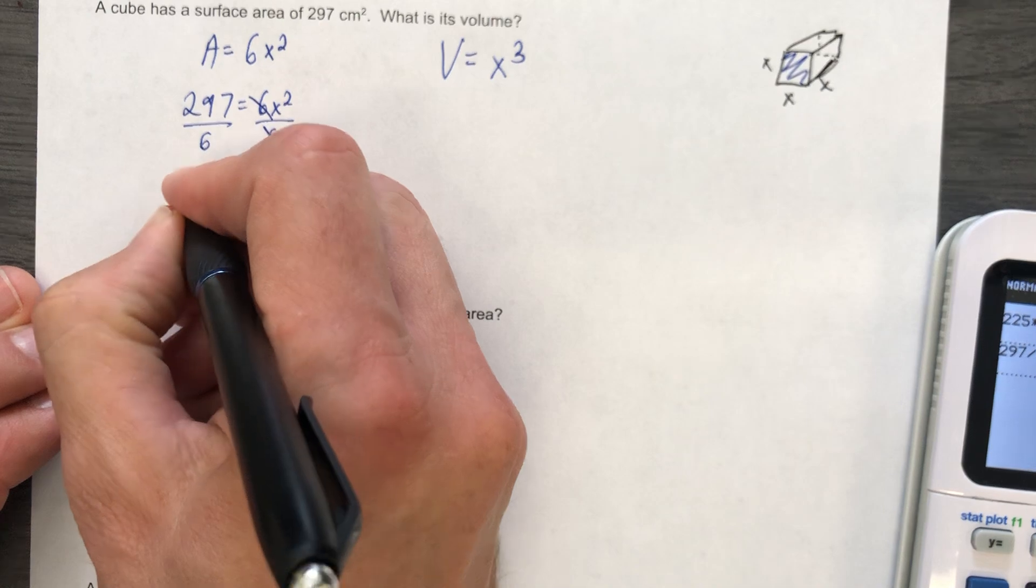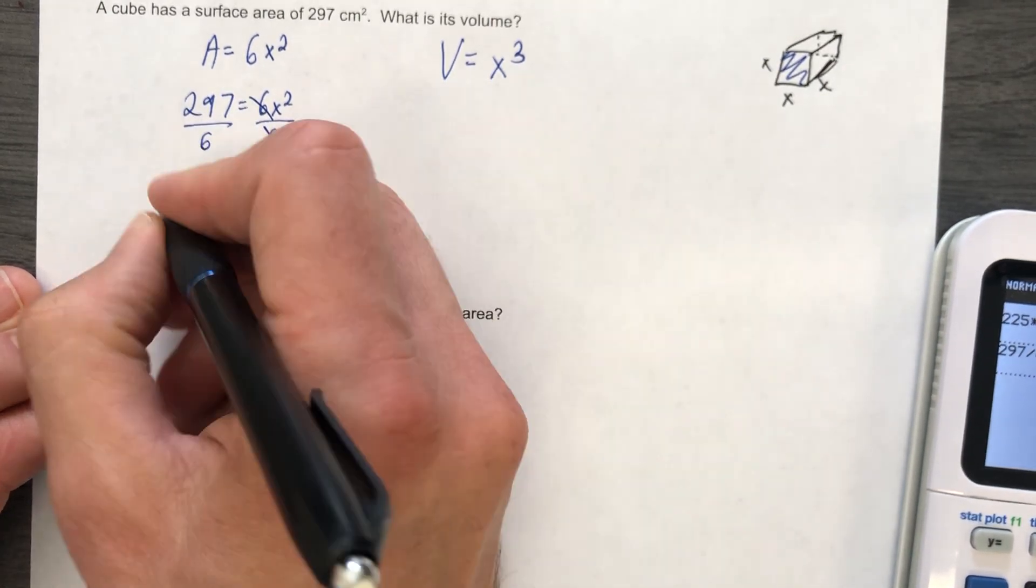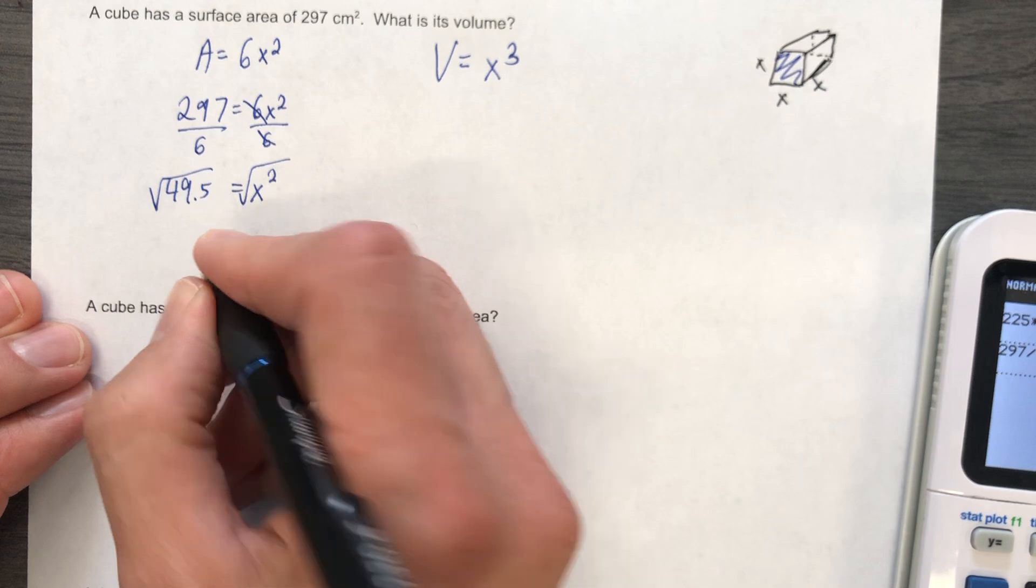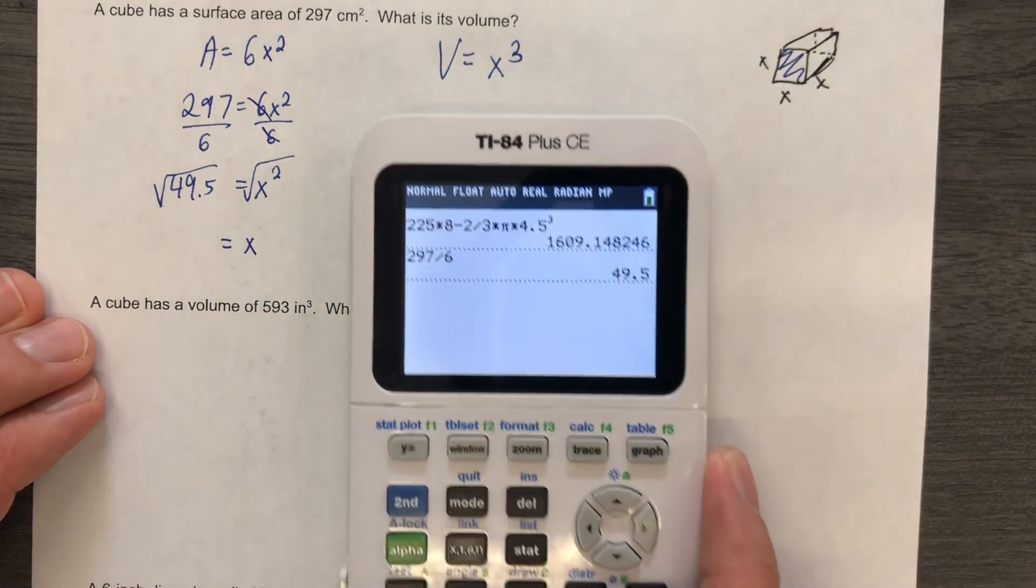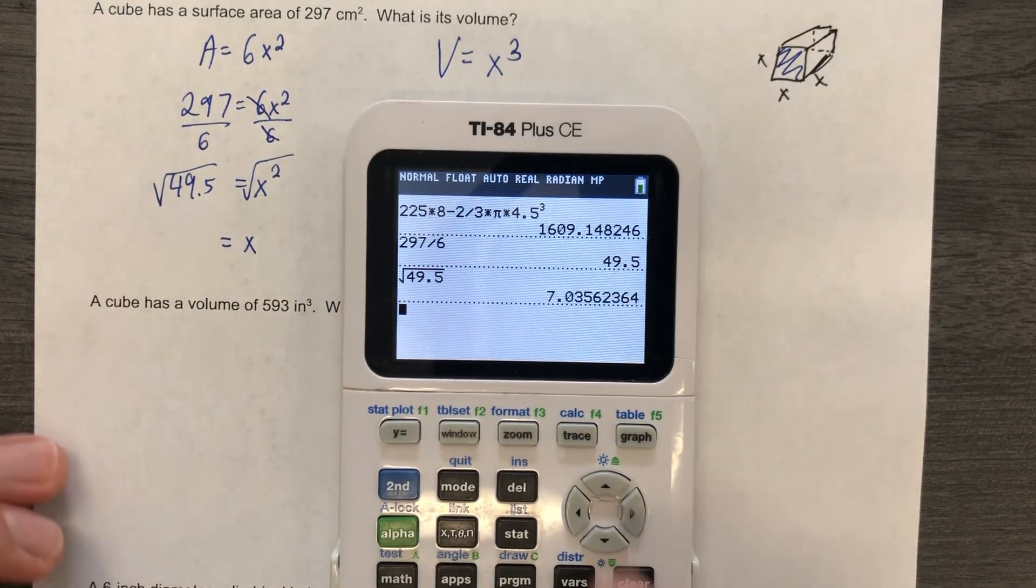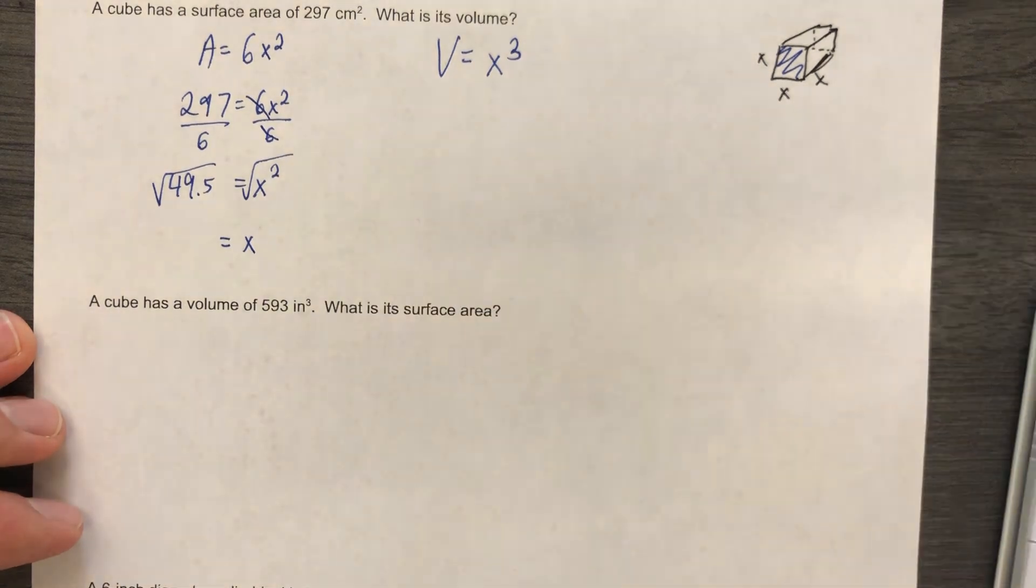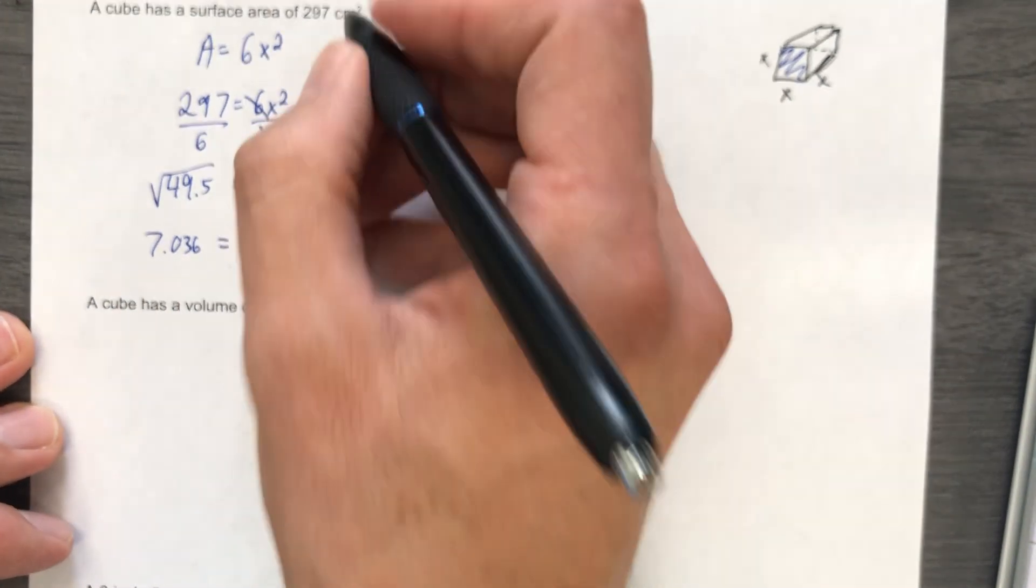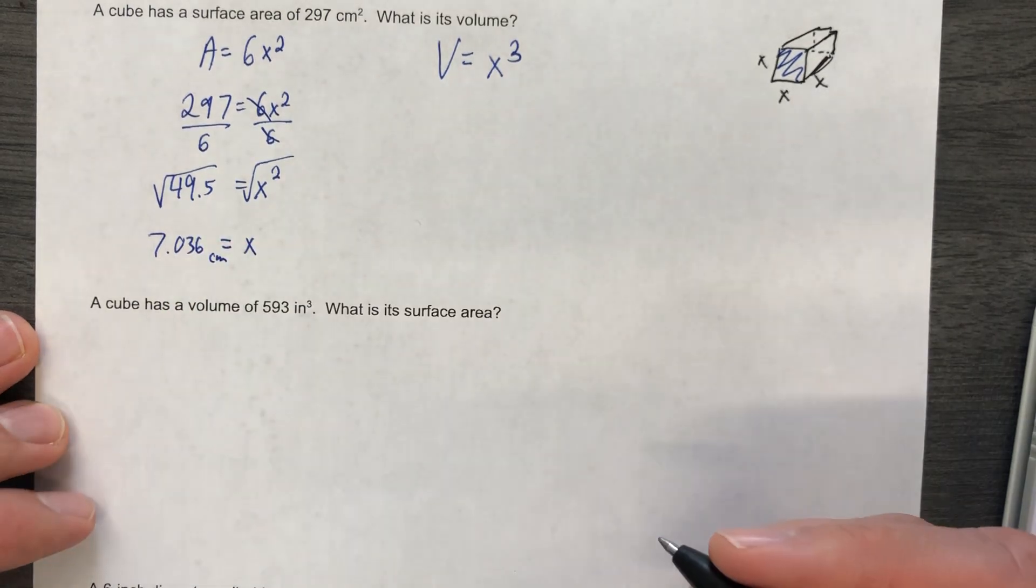There we go. 49.5. We need the square root of 49 and a half. That's going to be just a little more than 7. And we will not do the plus or minus thing because we're finding the length of a side. So the square root of 49 and a half is 7.036. What centimeters? I'm glad you asked.